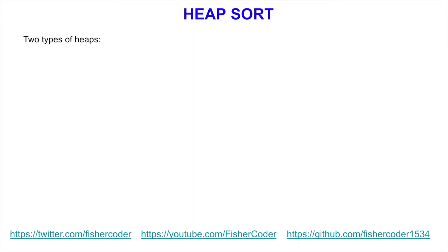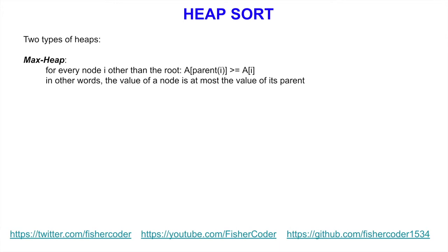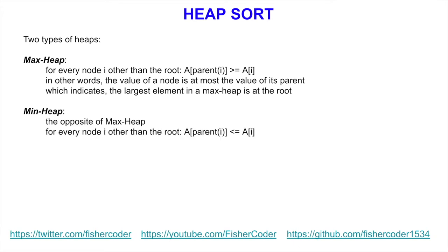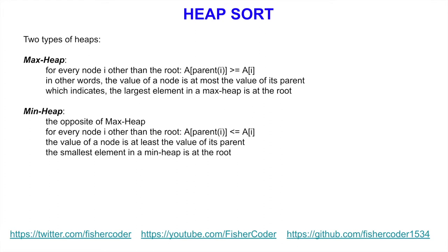There are two types of heaps. One is called a max heap — for every node i other than the root, the parent of node i is always greater than or equal to that node. In other words, the value of a node is at most the value of its parent, which means the largest element is at the root. A min heap is the opposite: for every node i other than the root, its parent is smaller than or equal to i. The smallest element in the min heap sits at the root.